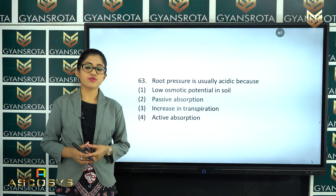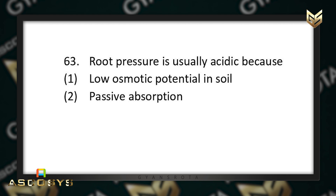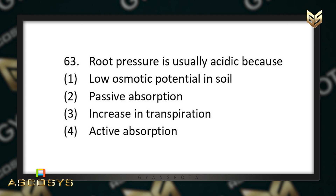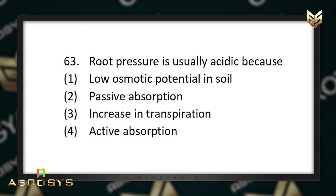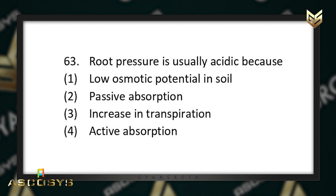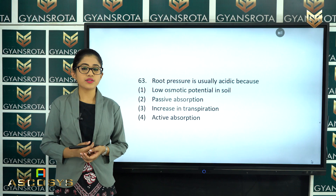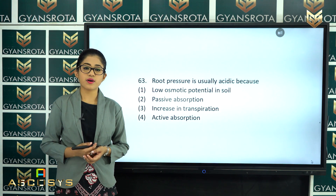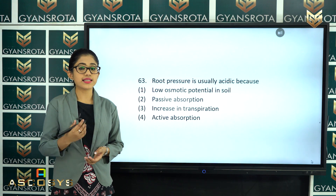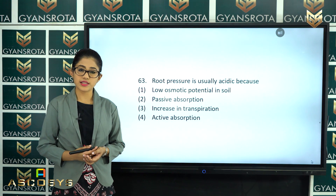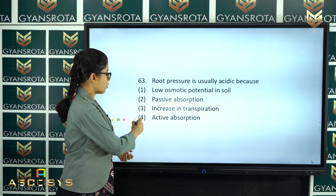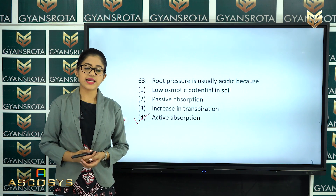The next question is question number 63. Root pressure is usually due to low osmotic potential in soil, passive absorption, increase in transpiration, or active absorption? From the chapter Transport in Plants, root pressure occurs because of active absorption. Option number 4 — active absorption — is the correct answer.